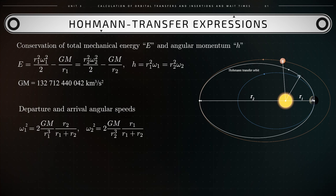Omega 2 is the angular speed of the spacecraft upon arrival at Mars. The corresponding linear speed equals v2, which in turn equals r2 times omega 2.